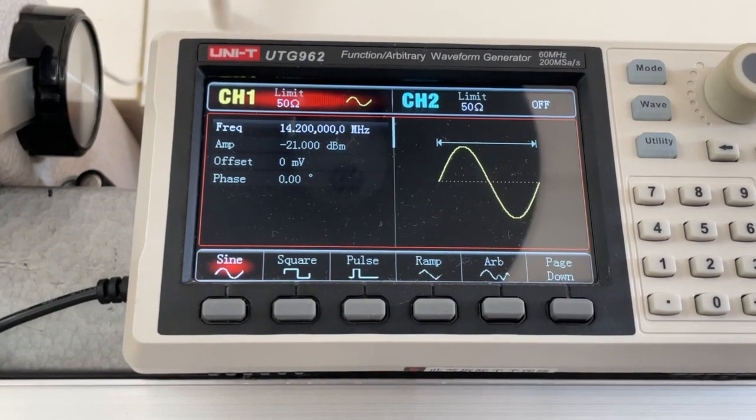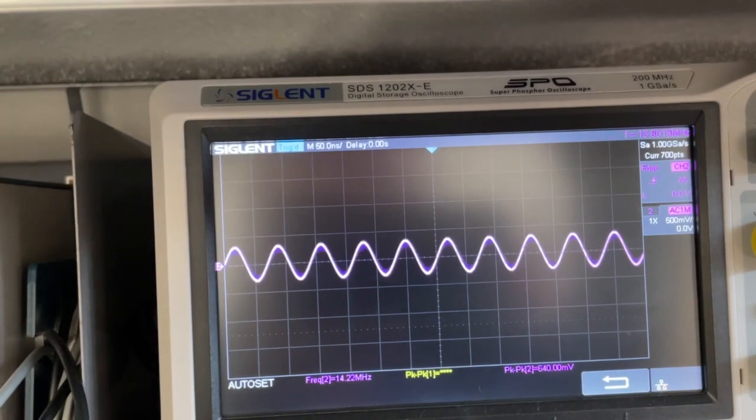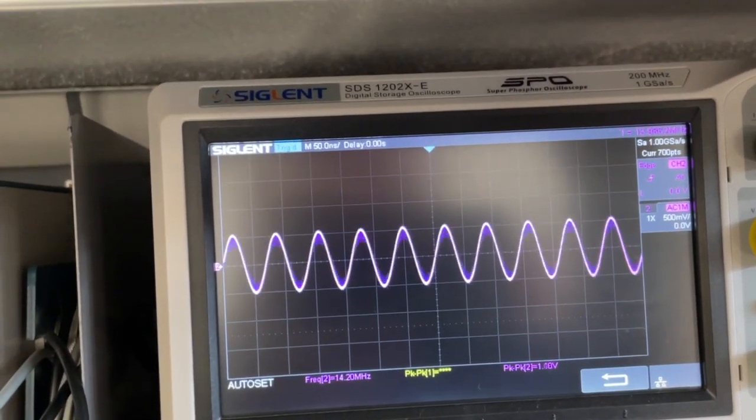In the data sheet, minus 21 dBm is the maximum signal that you input before the amplifier starts to go into compression. That's minus 30 dB increase.